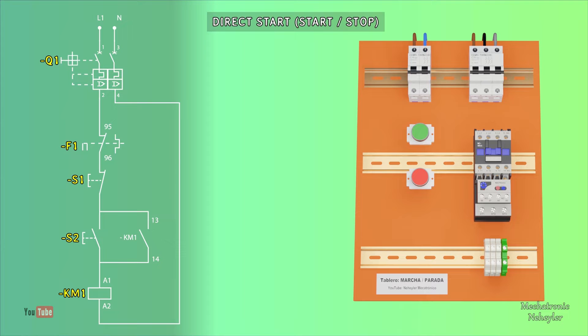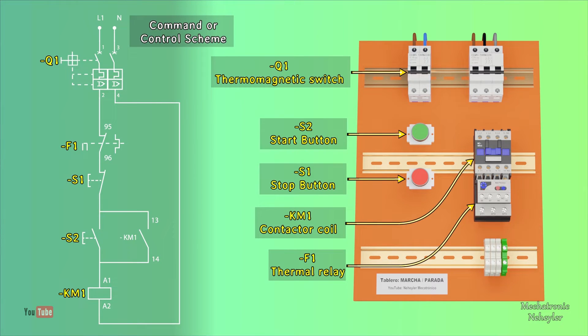Now let's see the elements that make up the control circuit. Q1 is a bipolar thermomagnetic switch responsible for putting the entire control part into service, in addition to providing protection to the conductive cables of the control circuit. S0 is a normally open button for start. S1 is a normally closed stop button.